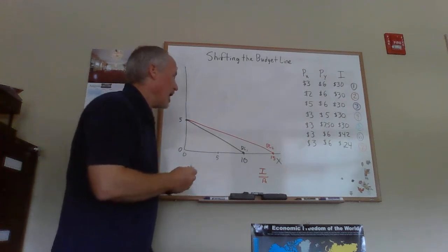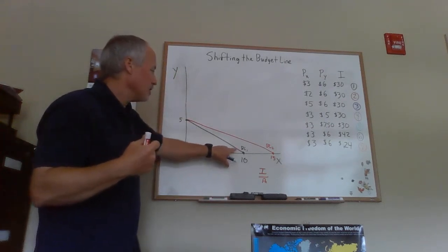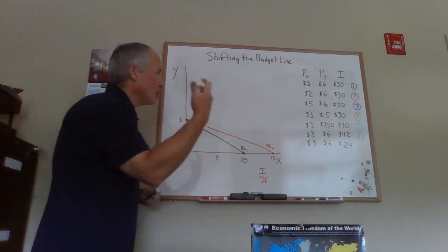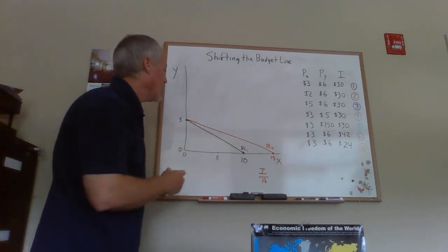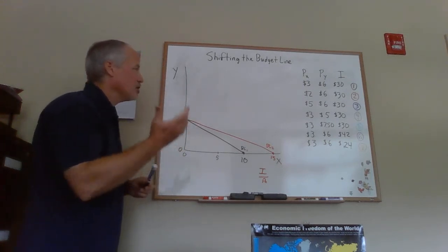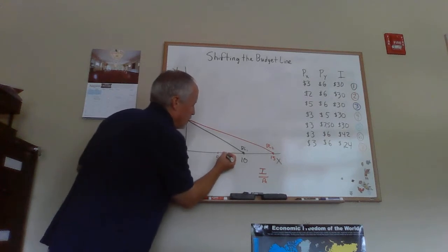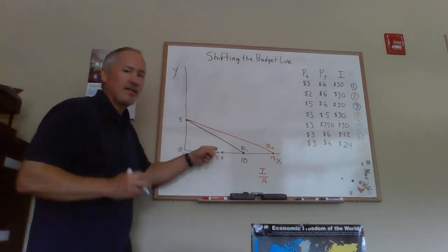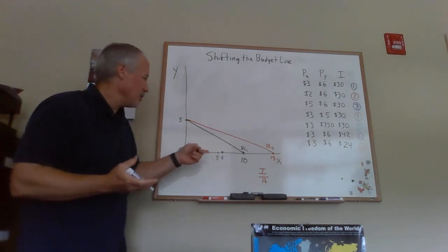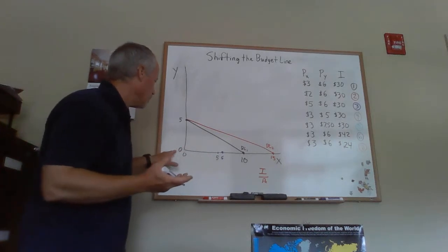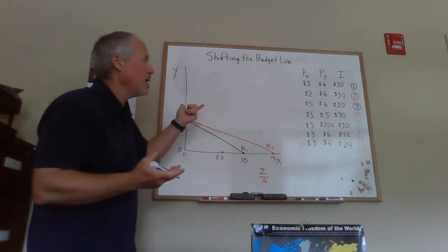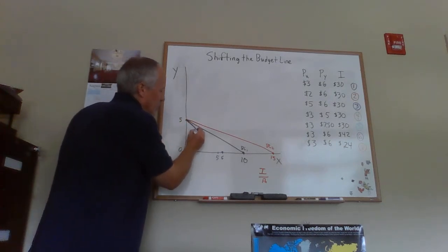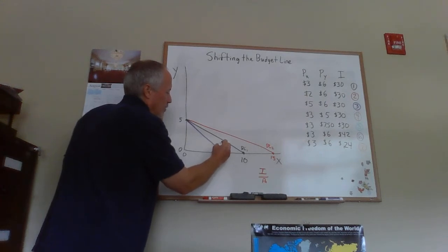Our third budget line is going to show a higher price of X than what we started with for BL1. We started with a price of 3 and now the price of X is going to go up to 5. Well, at a price of $5, 30 divided by 5 is 6. We know for BL3, you'll only be able to buy 6 units of X if you spend all your money on X and have no units of Y. The price of Y is still $6, income is still $30, so nothing's happened to the Y intercept. We'll draw this in here and this will be BL3.